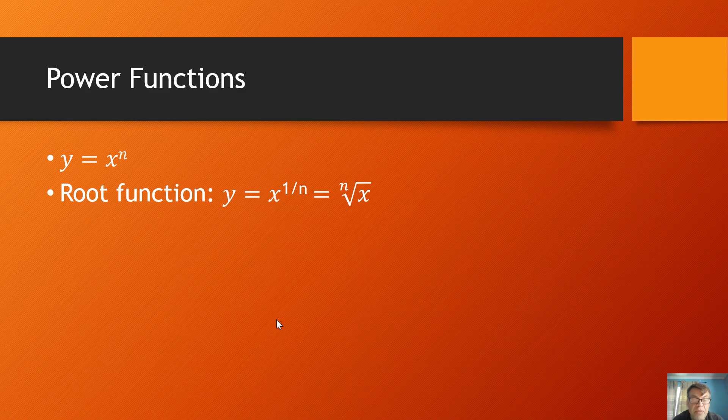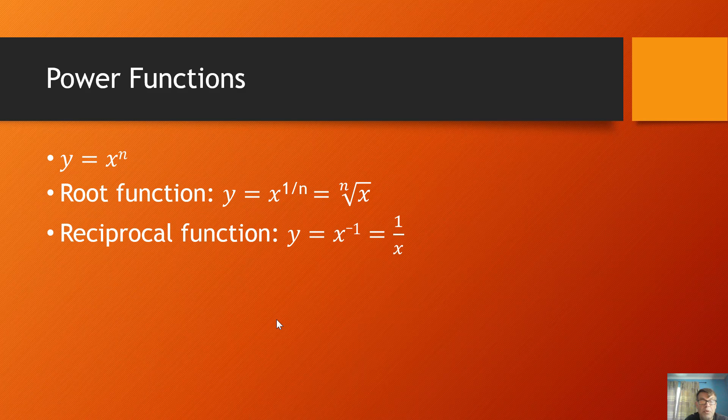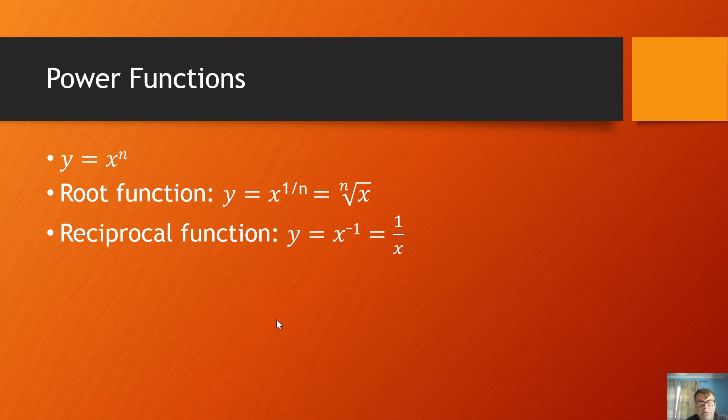But there are a couple of power functions that don't really fit into the polynomial form very well. So like the root function is a fractional power. Fractional powers are square root powers. So the x to the 1 over n is the nth root of x. Then you have the reciprocal function, which is a negative power. x to the minus 1 is the flipping, you flip it, 1 over x. So these are some different power functions that are different enough that we can say them separately from polynomials.